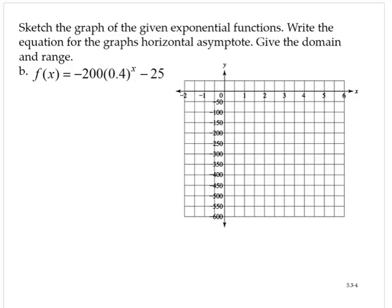F of x is equal to negative 200 times 0.4 to the x subtract 25. Now again, let's kind of forget about the negative 25 for a moment. Let's forget about that.